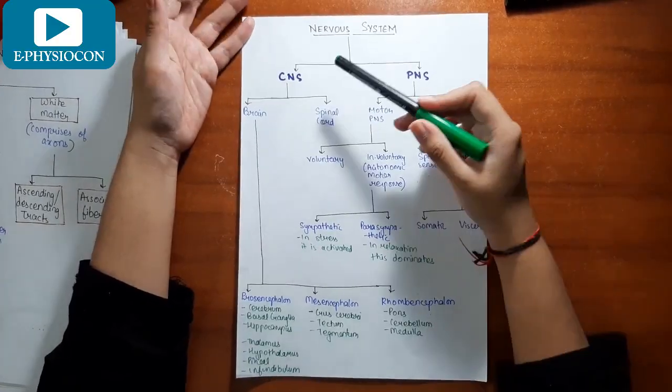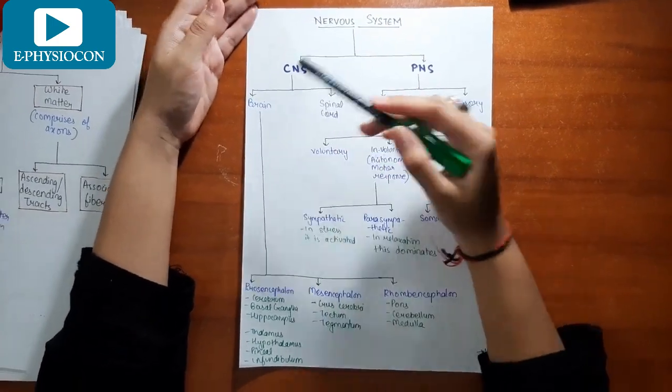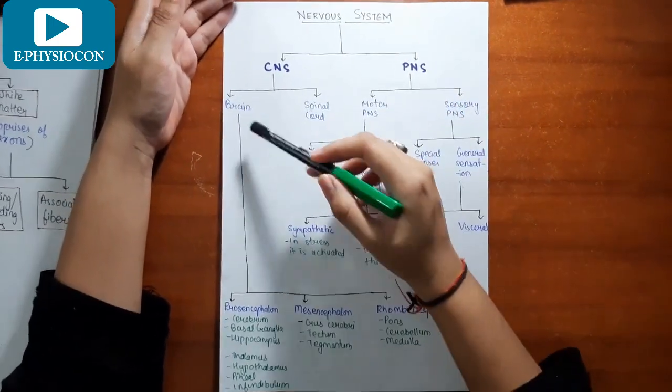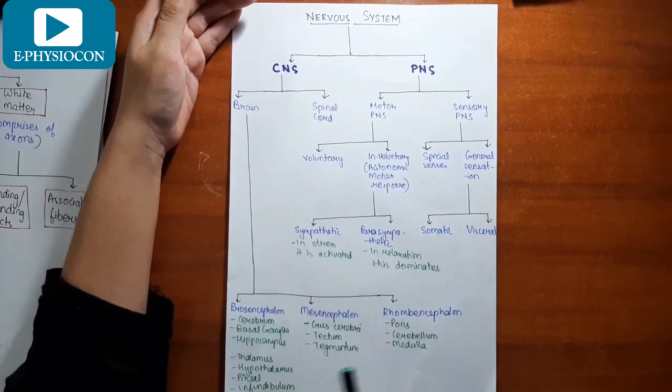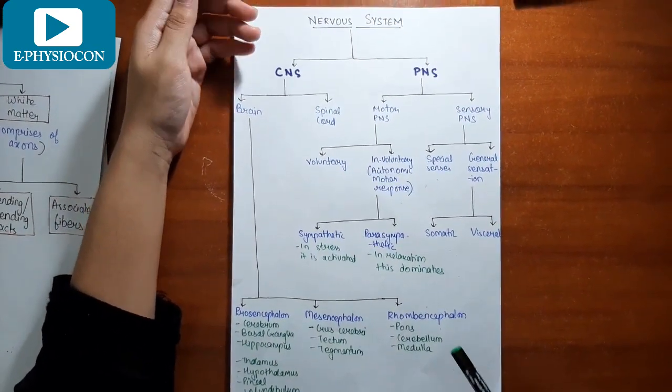Spinal tracts are very important in any neurological condition. Before moving towards our topic, let's first discuss something about the nervous system. Our nervous system is divided into the central nervous system and the peripheral nervous system. The central nervous system is divided into the brain and spinal cord. The brain is further divided into the prosencephalon, the mesencephalon, and the rhombencephalon.